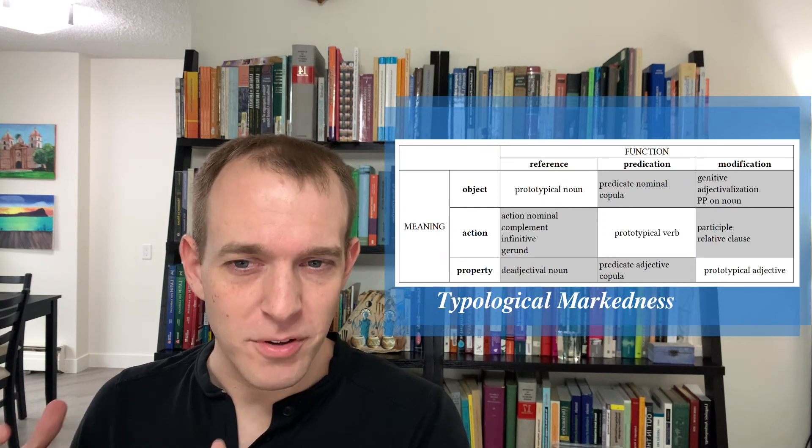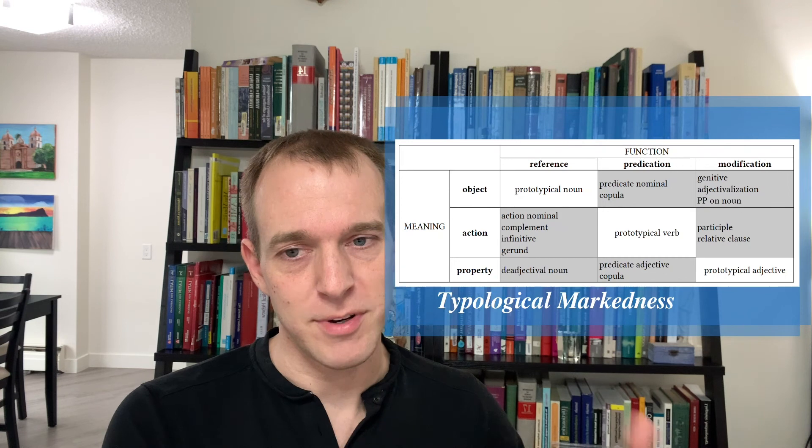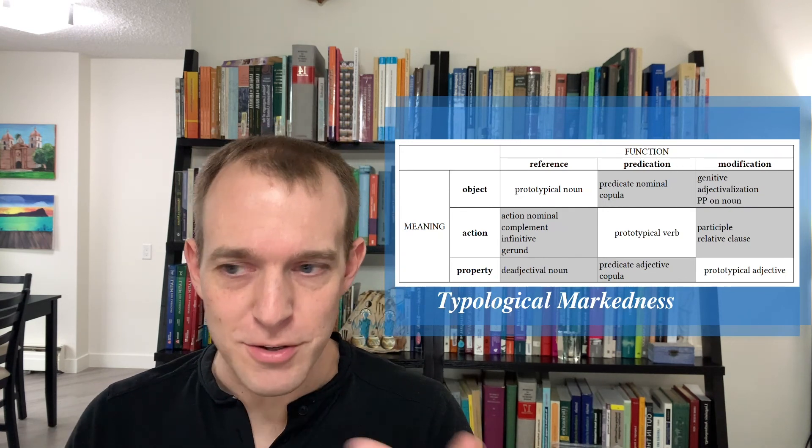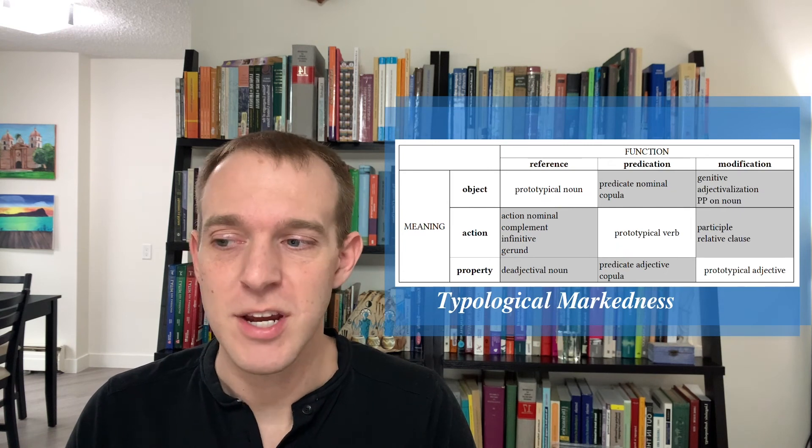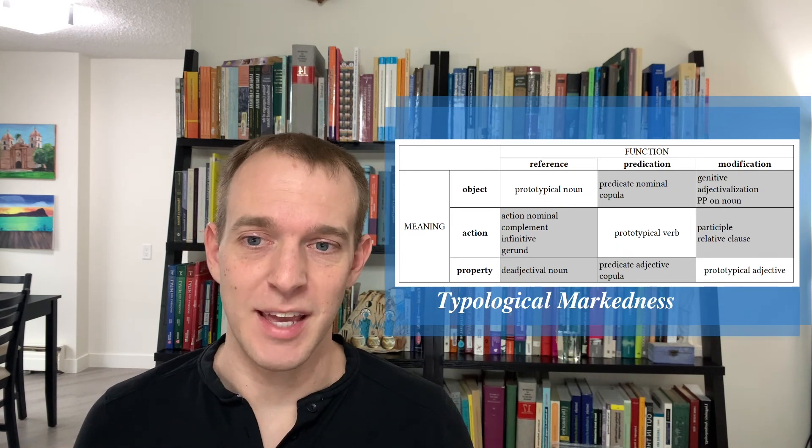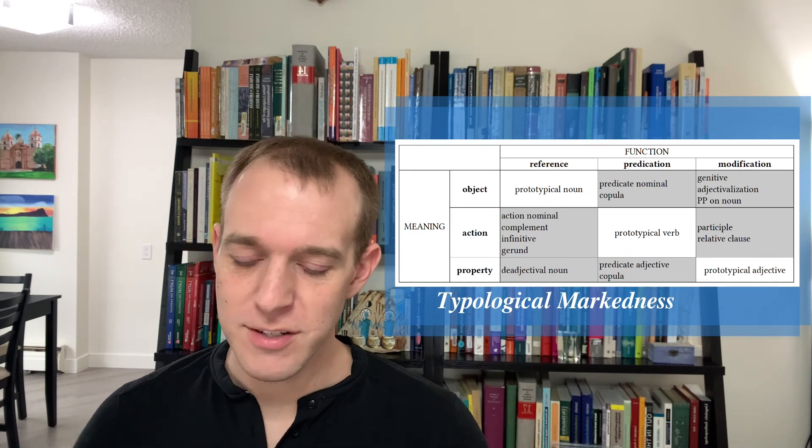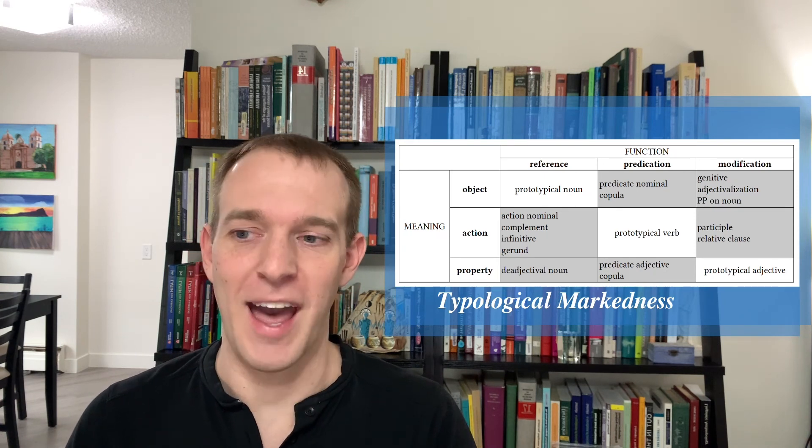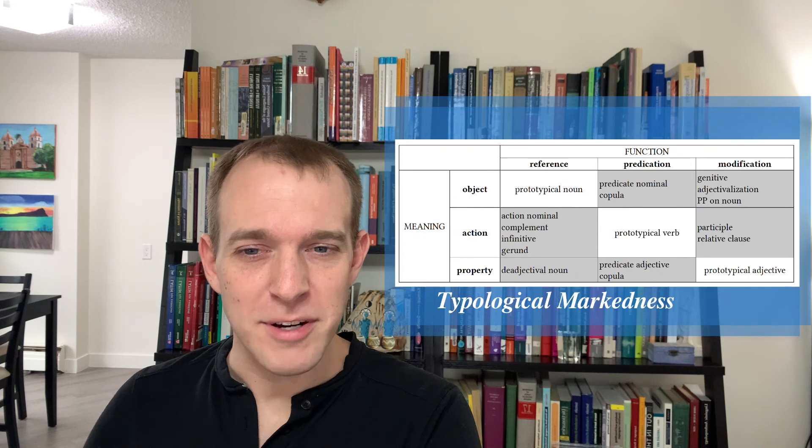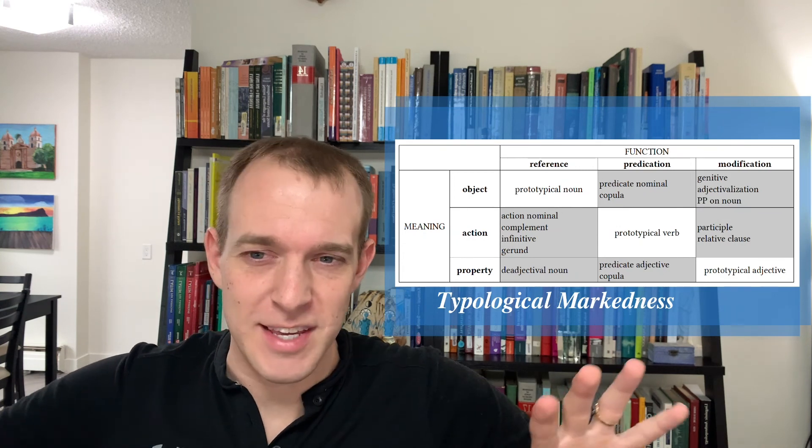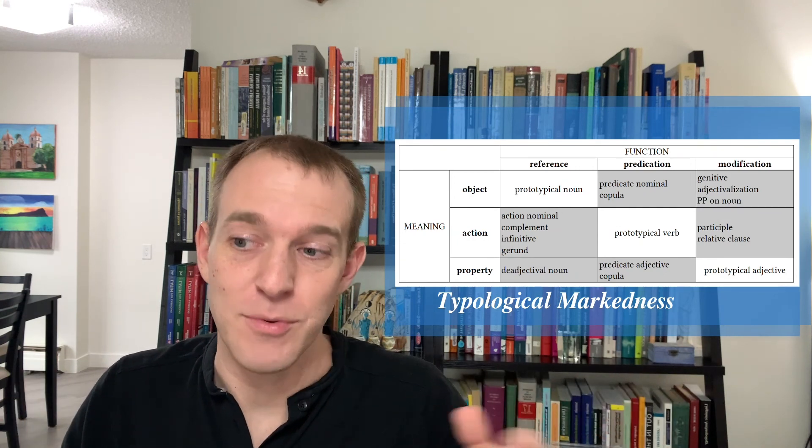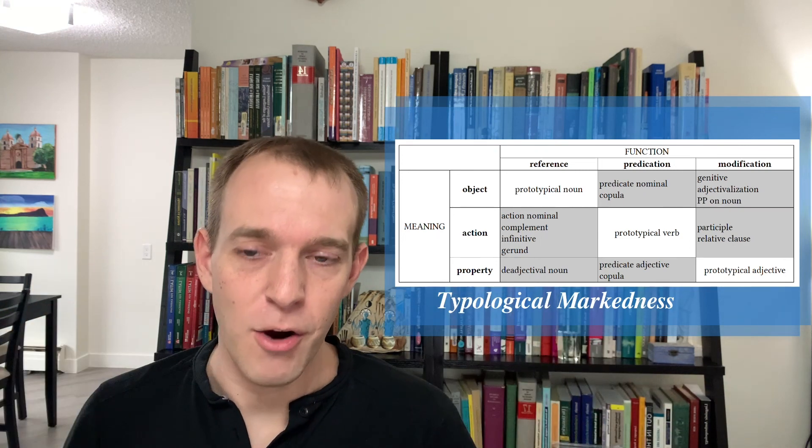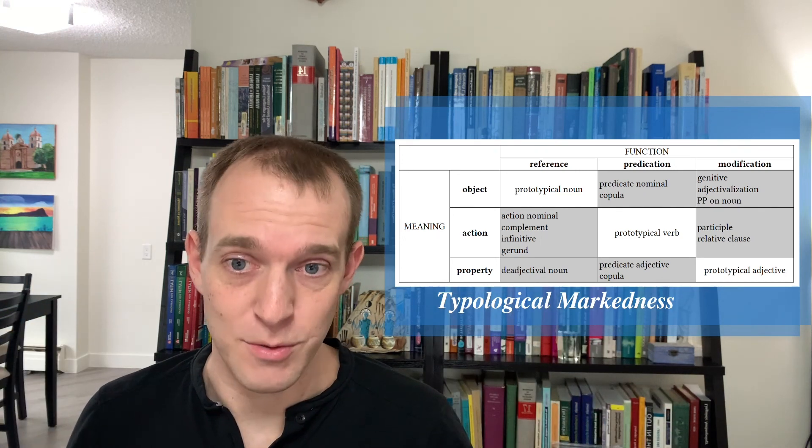So a prototypical object is one that's used to refer. And maybe the less prototypically you're using that word in speech, the more marked it has to be in language. So this is a really interesting perspective because it says that languages themselves don't have parts of speech. Parts of speech, instead, are this emergent set of patterns that we see across languages that result from how we categorize the world.